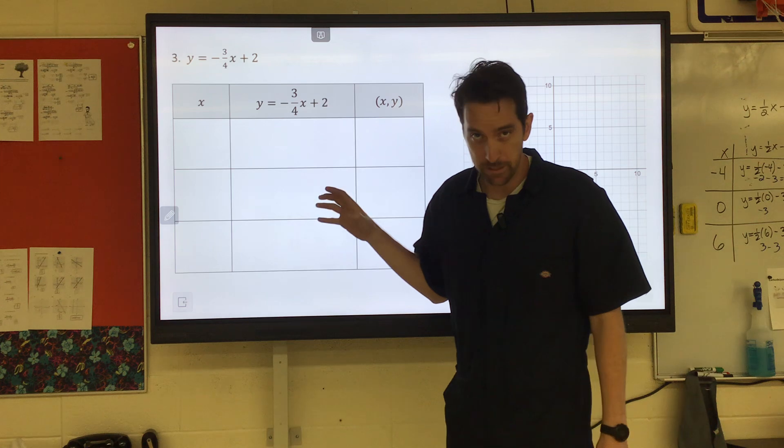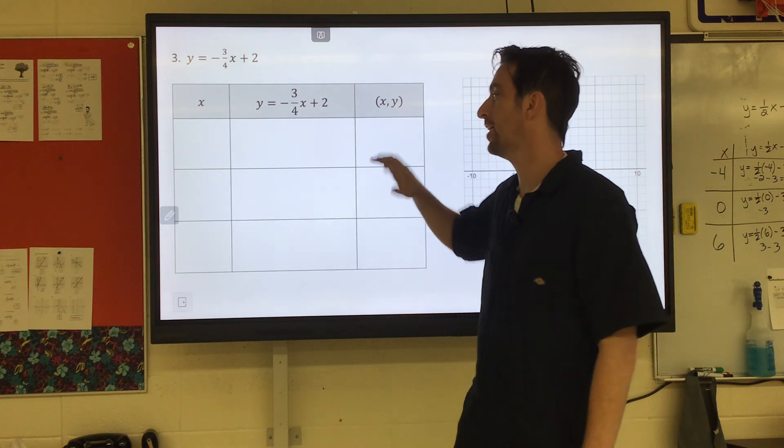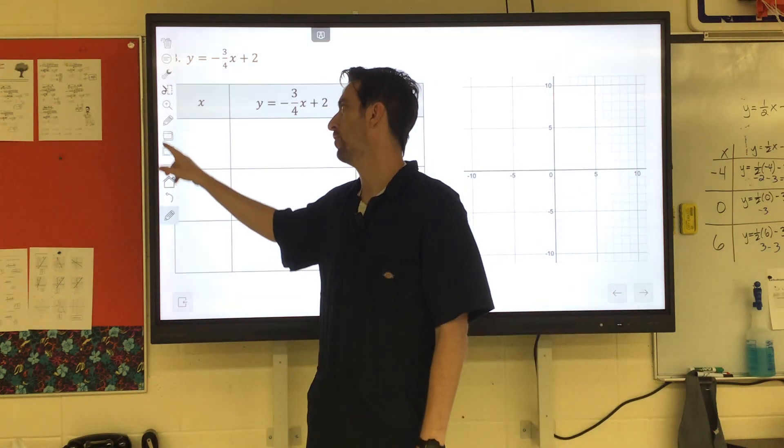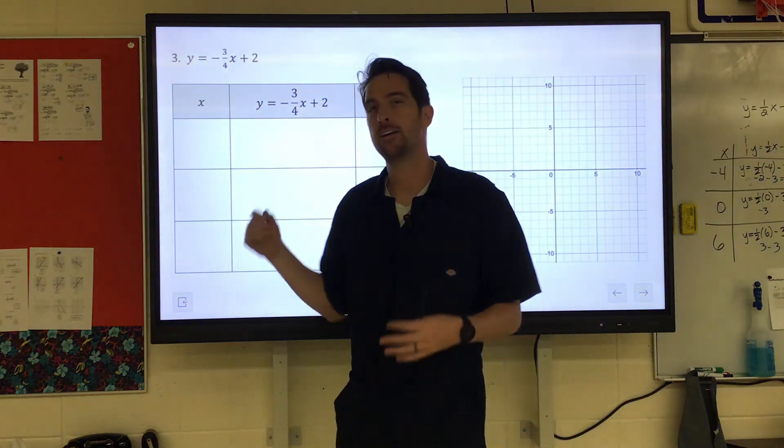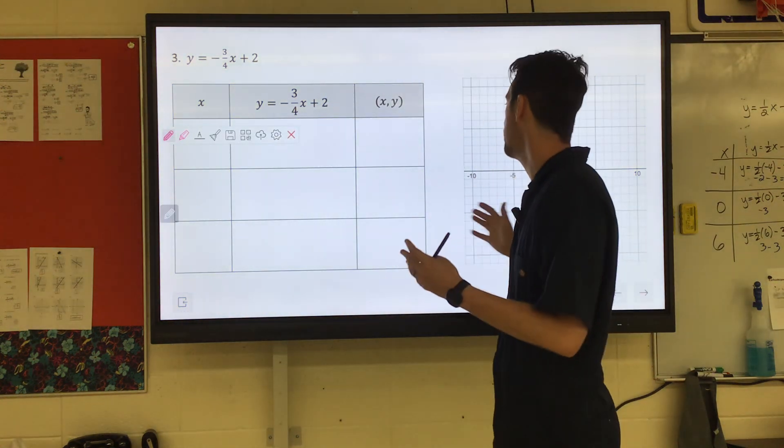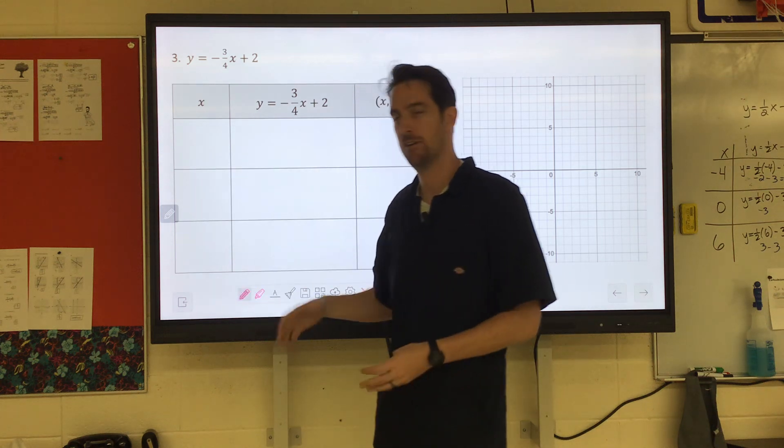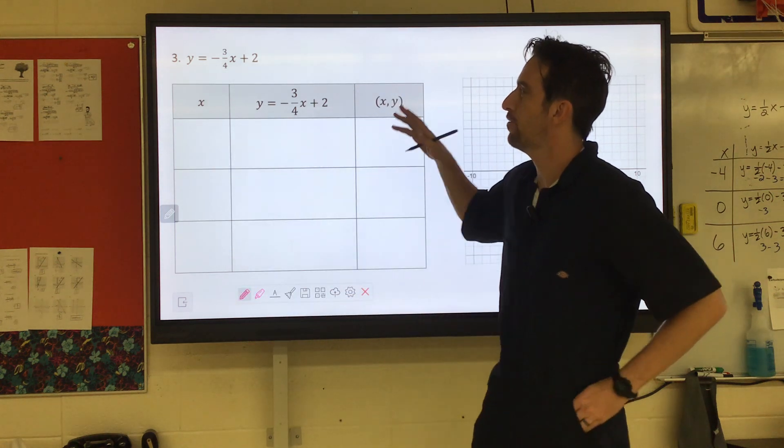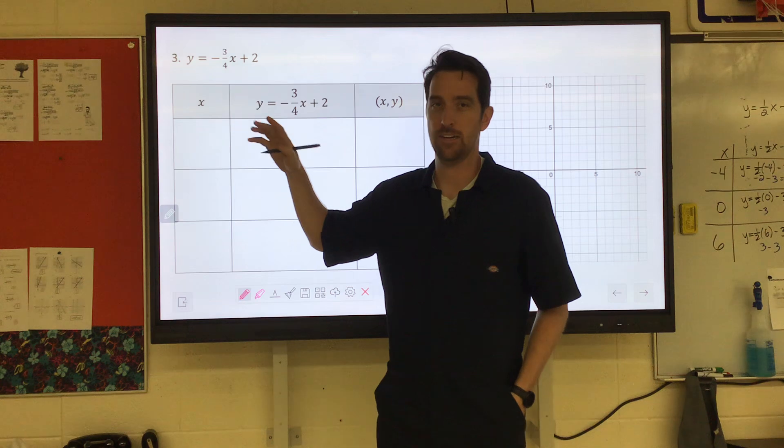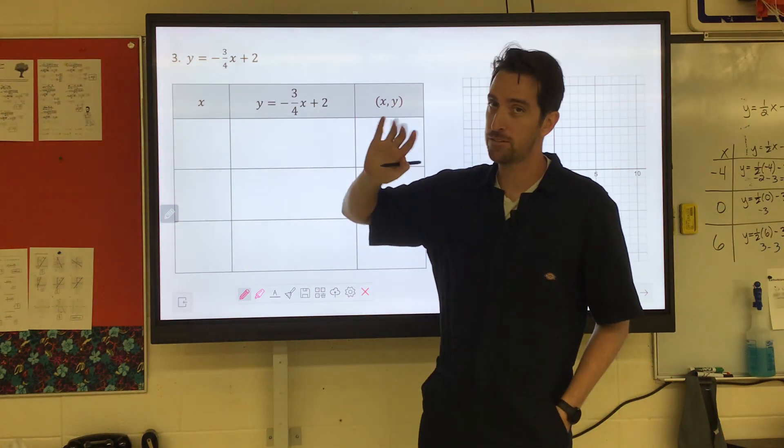So on the first page is the table method. Now you can choose any numbers you want to substitute in for x in theory, but you do want to make sure that they're going to fit on the graph. So obviously we'd want them between negative 10 and positive 10.